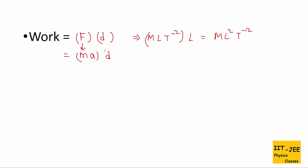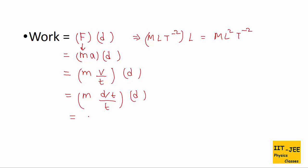Since D is a base quantity, keep it as is. For A, use V/T, then break V = D/T again. This gives M D²/T². Plugging in the dimensions: M, L², and T² in the denominator, so T becomes T⁻². Enclosed in square brackets, this is the dimensional formula of work: [M L² T⁻²].